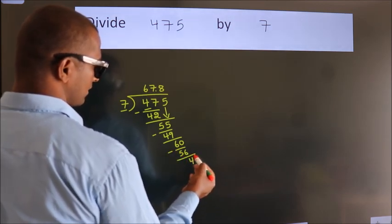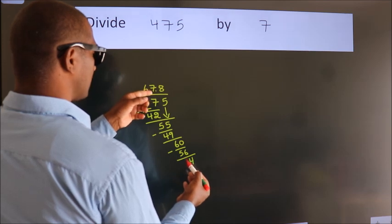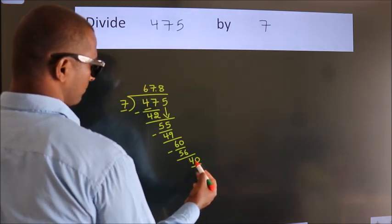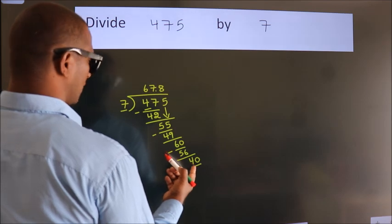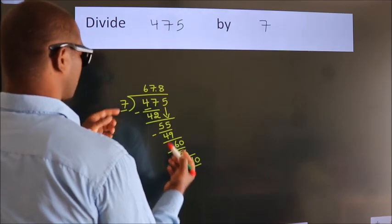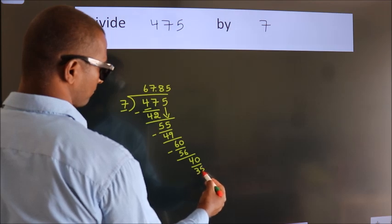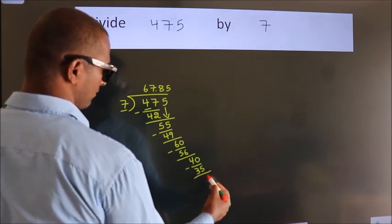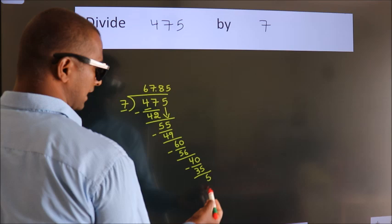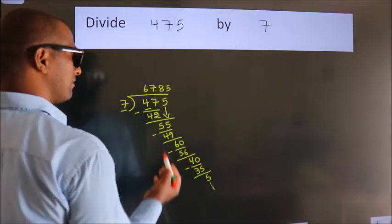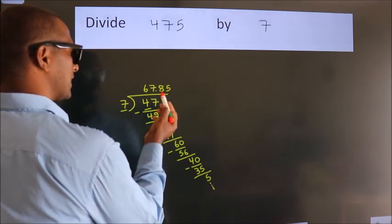After this, we already have the decimal. So directly take 0. So 40. A number close to 40 in the 7 table is 7 times 5, 35. Now we subtract, we get 5. And the division continues. It is enough if we do up to two decimal places.